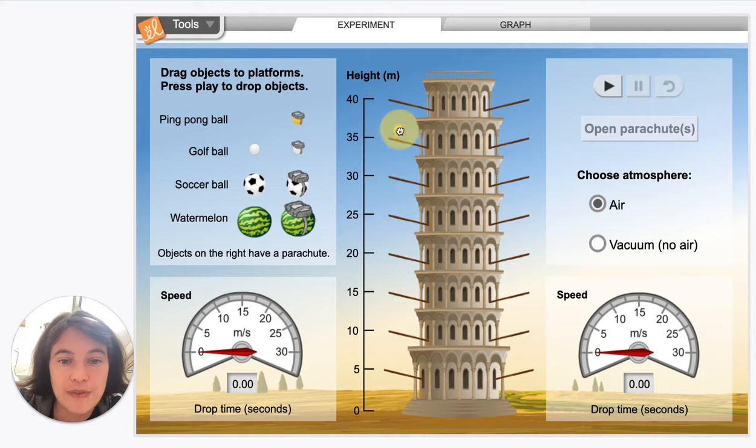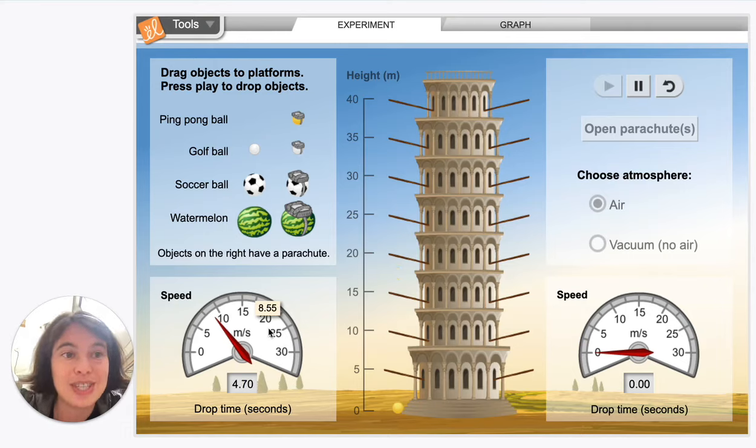Let's drop this from 35 meters in height. Again, it speeds up to 8.55 meters per second, and then it just sort of stays there. This arrow isn't increasing past this point right here.